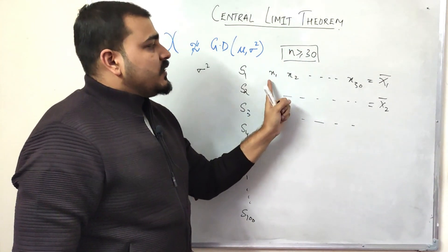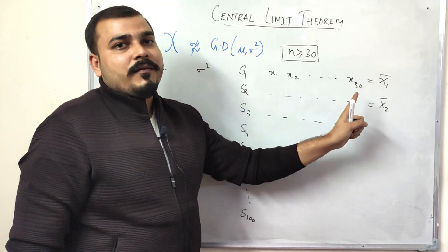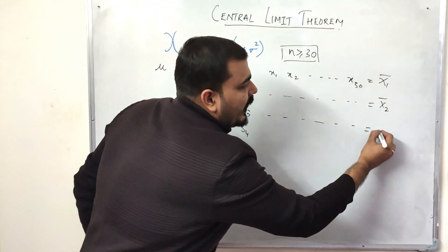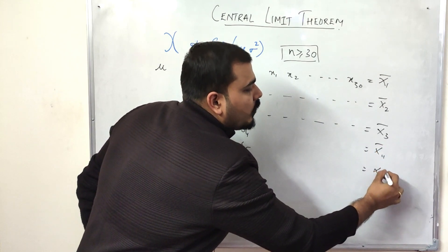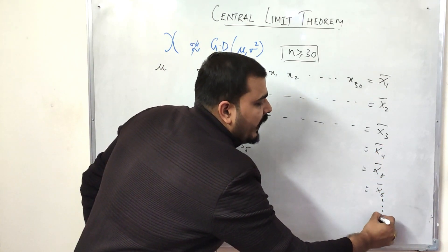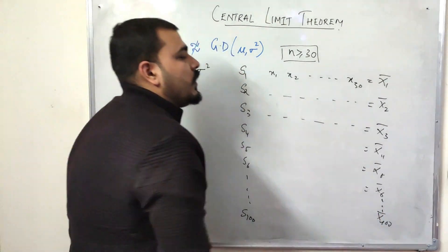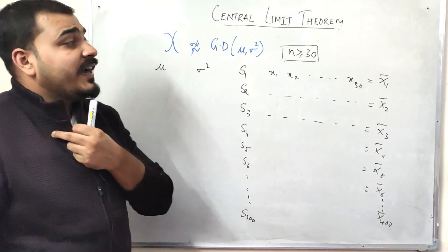And I'll have till x̄100 mean. Now, Central Limit Theorem says that if I take all this mean and try to plot them with the help of a histogram, then I will consider that this x̄ which I am considering—all the means of my sample—will belong to a Gaussian distribution.